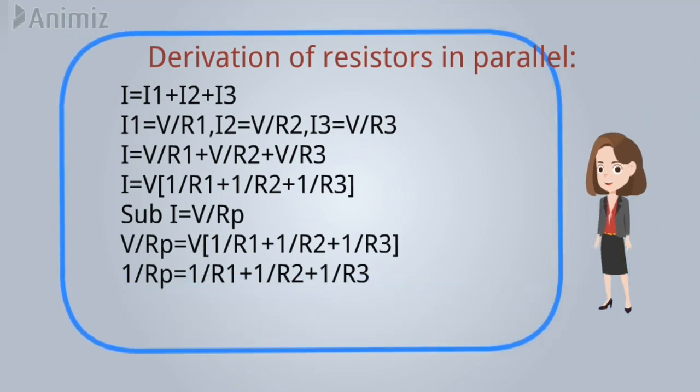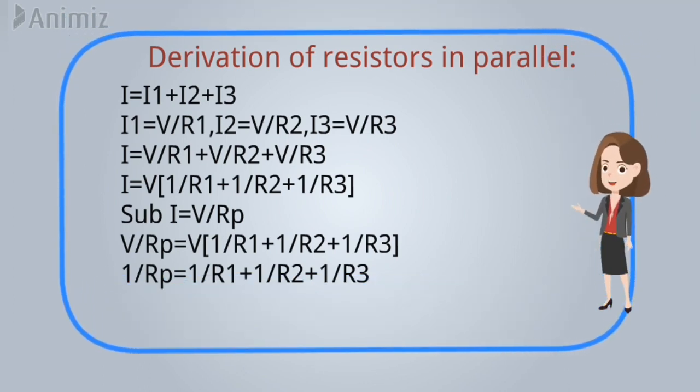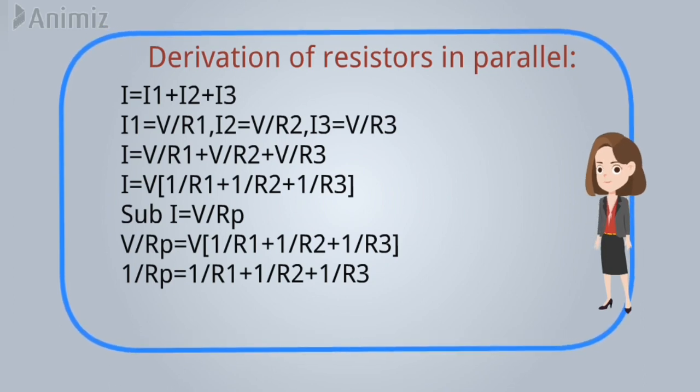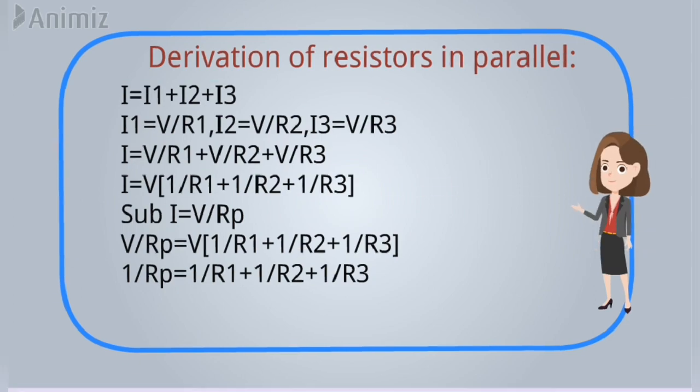We shall consider three resistors and total current I. I is equal to I1 plus I2 plus I3. I1 is equal to V by R1, I2 is equal to V by R2, I3 is equal to V by R3. That is, I is equal to V into 1 by R1 plus 1 by R2 plus 1 by R3. Substitute I is equal to V by Rp. Because it is parallel, V by Rp is equal to V into 1 by R1 plus 1 by R2 plus 1 by R3. That is, 1 by Rp is equal to 1 by R1 plus 1 by R2 plus 1 by R3.